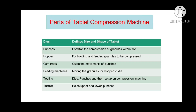Hello friends, welcome back to the industrial pharmacy series. Tablet compression machines are made keeping in view the type of dies and punches that will be used on them. The dies and punches and their setup on a compression machine is called tooling. The tooling used in tablet compression are as follows: dies, punches, hopper, cam track, feeding machines, tooling, and turret.